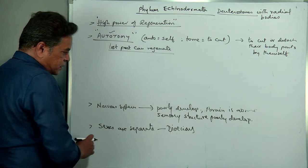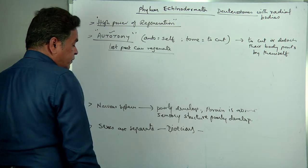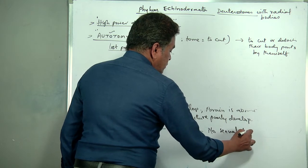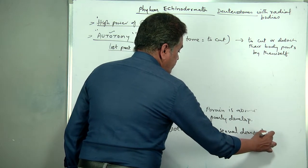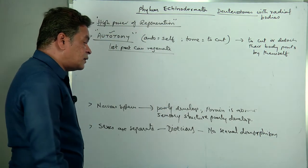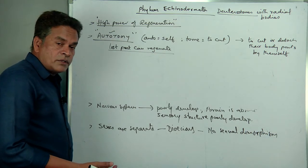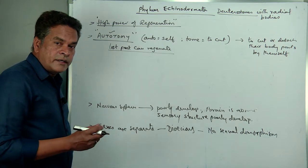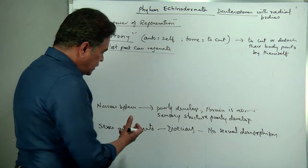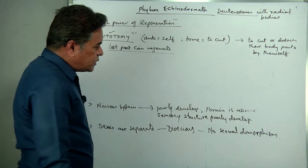Sexes are separate here, and you cannot differentiate by sexual dimorphism — no sexual dimorphism is exhibited. Identifying sex either male or female based on morphological features is called sexual dimorphism. You cannot identify which animal is male and which is female. Though they are separate, no sexual dimorphism is exhibited.